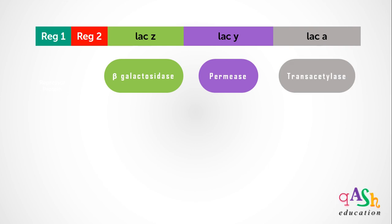The second regulatory region does not code for any protein and is known as the operator sequence — it has its own promoter. The first regulatory region, called lac I, codes for a repressor protein, also having its own promoter sequence.